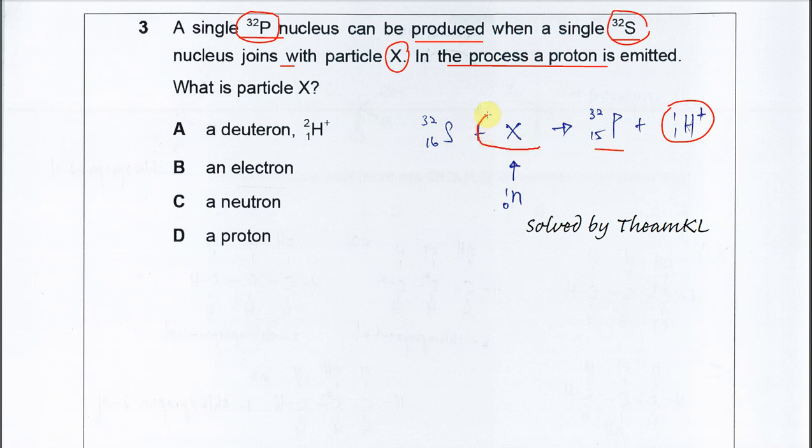If you're able to construct this equation, then you should know that particle X must be a neutron. Why? Because the phosphorus mass is 32 and the proton number is 15, so after the reaction the proton is emitted. So 32 plus 1 is total 33, and proton also has one proton number, so 15 plus 1 is 16.